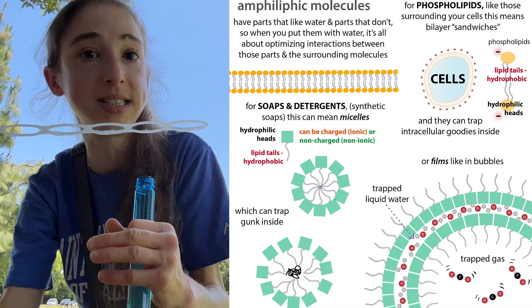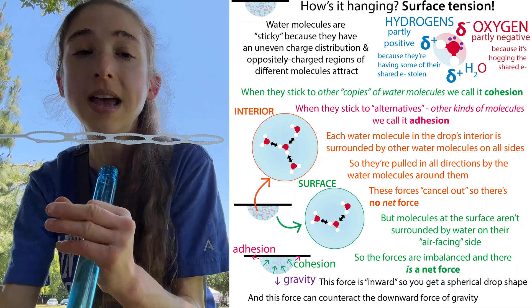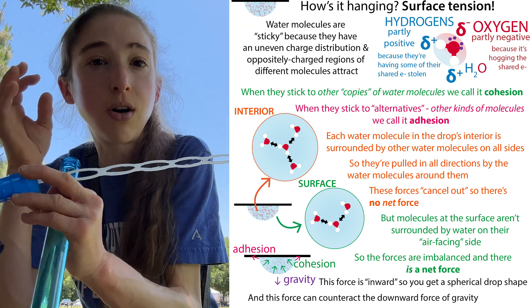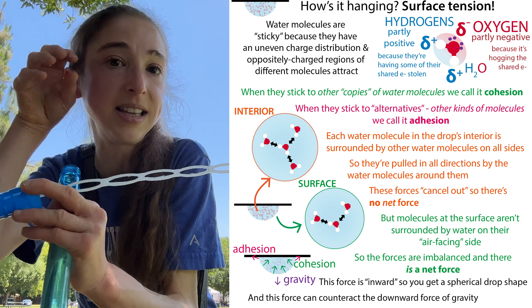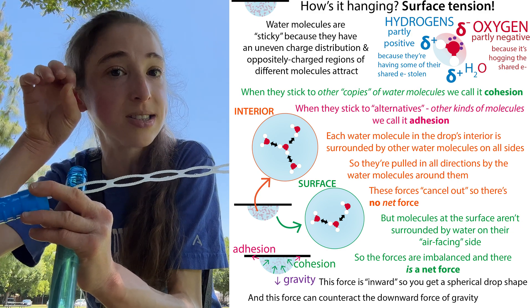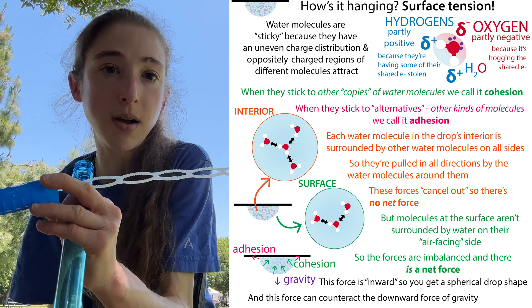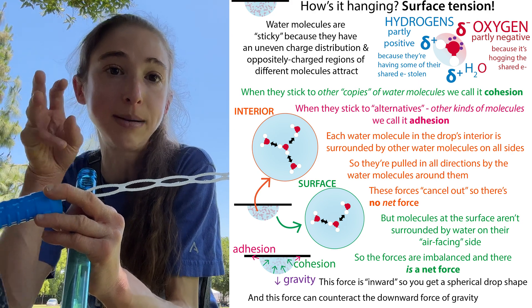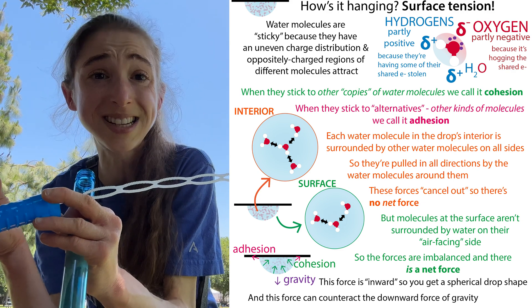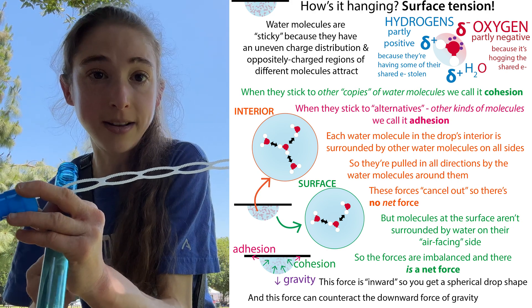The reason why we can't blow a bubble with pure water is that the water molecules are really sticky to one another because they have something called polarity. Basically, there are hydrogen parts — the Mickey ears on those water molecules — that like to hang out with the Mickey head, the oxygen, because they're oppositely and partly charged. Basically, water molecules stick to one another, so they're not going to want to expand and let air in.